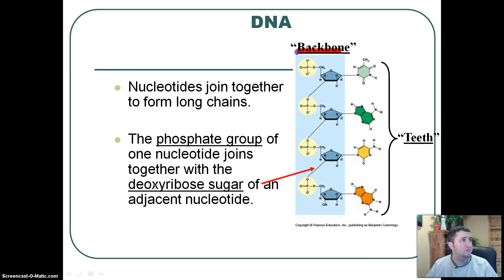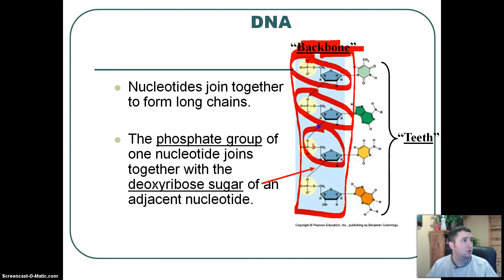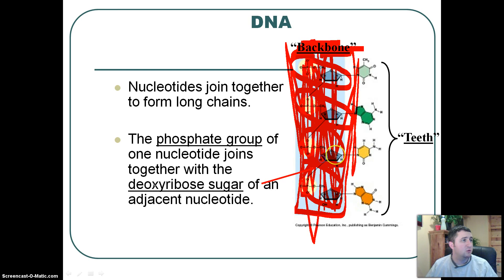So nucleotides come together, and they form long chains. You can see here, this is what we call the backbone of DNA, where we have the phosphate group and the sugar group come together, and the phosphate group and the sugar group come together enough to form this here backbone. All this right here is the backbone of DNA. No matter where you're looking on DNA, it's exactly the same.